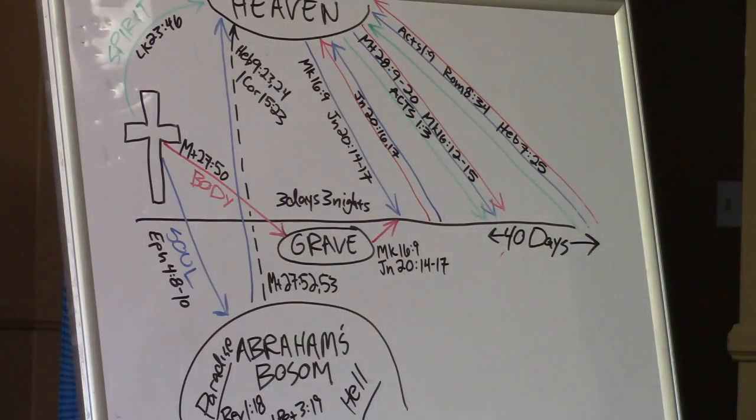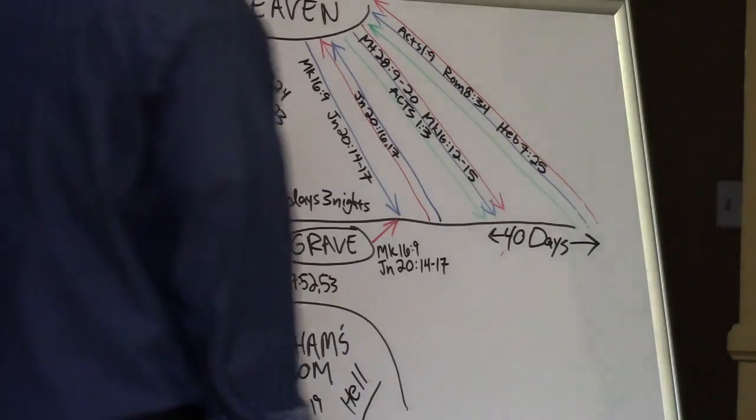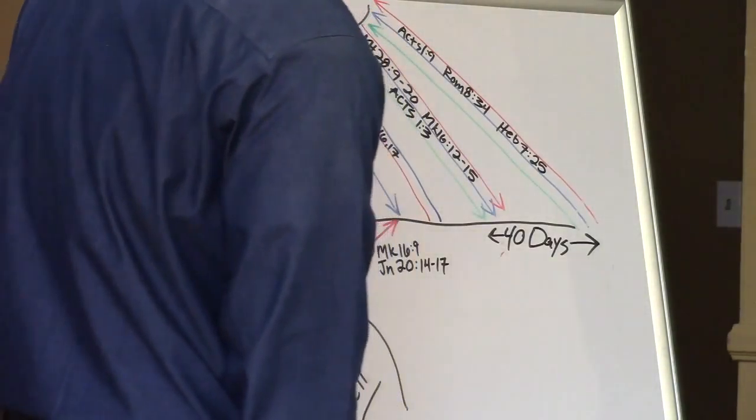Acts chapter 1 and verse 3. Just to let you know that we're not just taking one verse and running with it. We get the 40 days from the Bible. In Acts 1-3 it says, To whom also he showed himself alive after his passion by many infallible proofs, being seen of them 40 days, and speaking of the things pertaining to the kingdom of God. See that? So, 40 days.